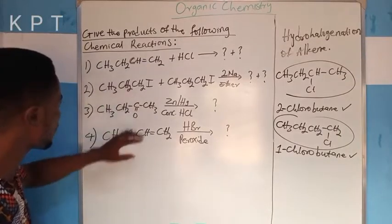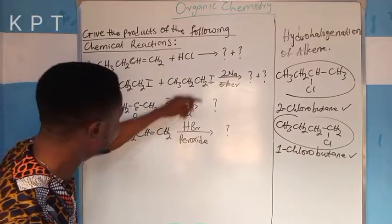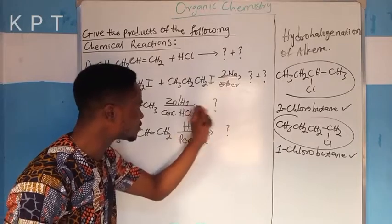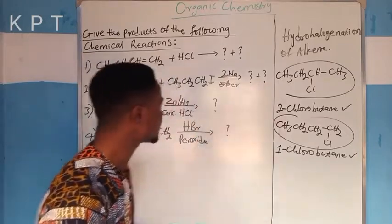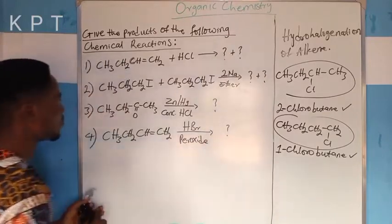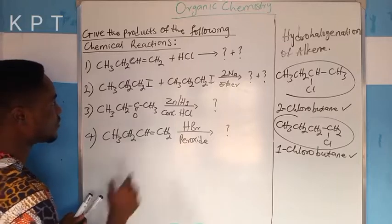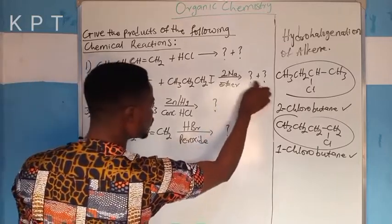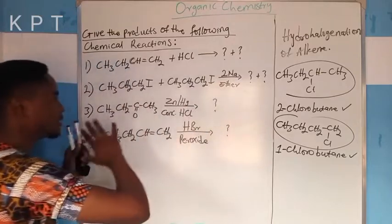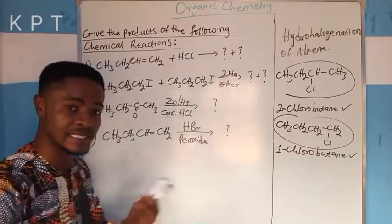Very quickly, for the second one: the second one is a situation whereby propyl iodide — two molecules of propyl iodide — reacts with two atoms of sodium in the presence of ether as a solvent to give us two things. This reaction leads to the formation of a symmetrical alkane. We have two answer blanks here, and ether is acting only as a solvent and also as a catalyst, meaning it will remain unchanged at the end of the reaction.